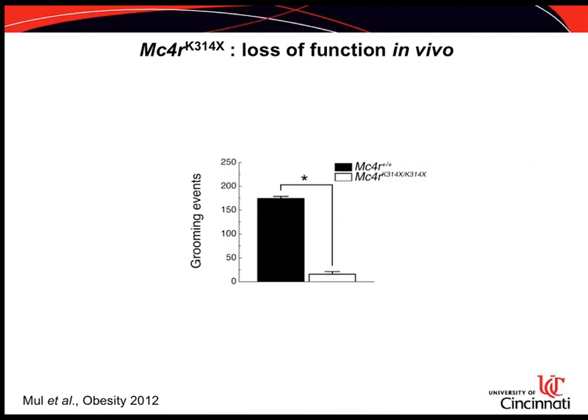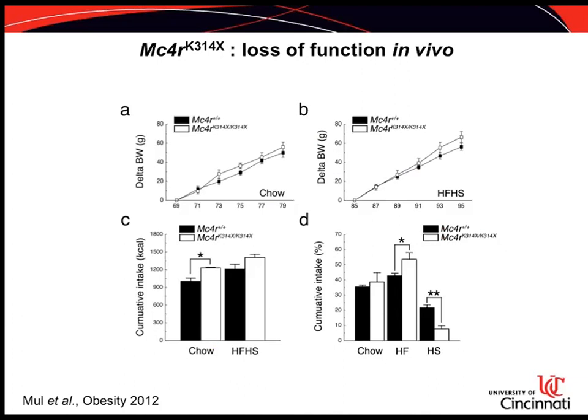Melanocortin signaling — specifically MC4R — has been suggested to play a role in grooming behavior in rats. We injected MT2 into the third ventricle and monitored grooming events. MT2 induced a much higher number of grooming events in wild-type rats, while this effect was completely absent in homozygous mutant rats. This confirmed that MT2-induced grooming is activated solely via the MC4R-mediated pathway — a question still open in the literature.